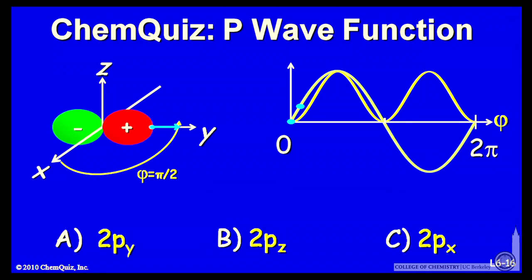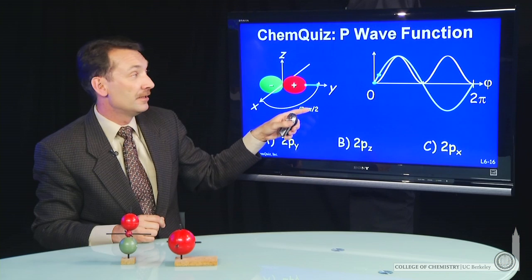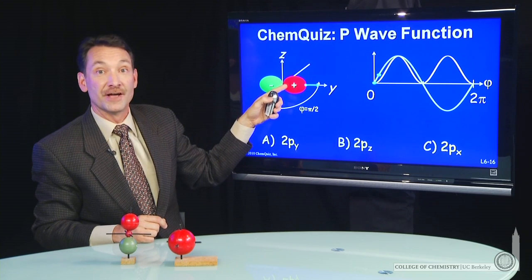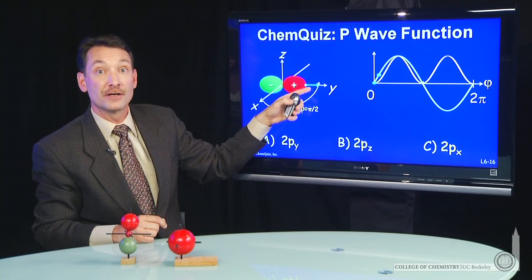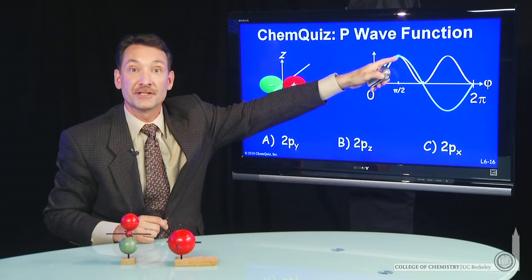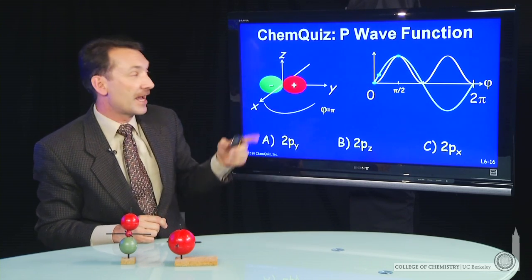If I let phi get larger, say let phi sweep all the way along to pi over 2 or 90 degrees, that gives you a maximum in the wave function value. That's as big as it's going to get along the positive y-axis. So that should be a maximum in the wave function and the square of the wave function.